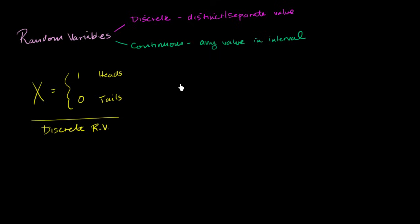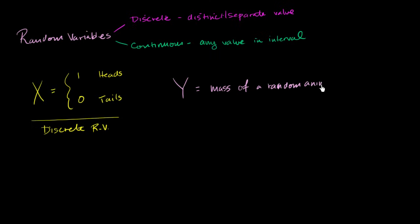Let's think about another one. Let's define random variable Y as equal to the mass of a random animal selected at the New Orleans Zoo.